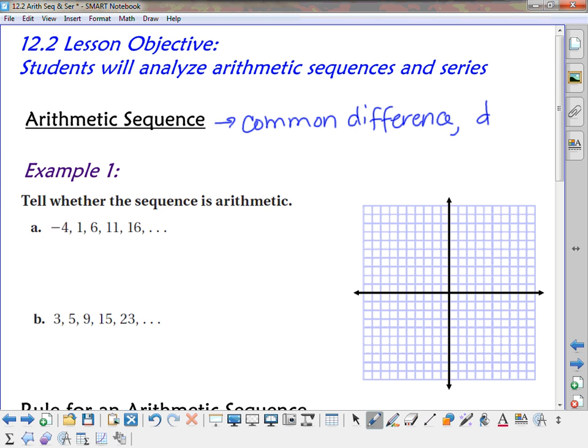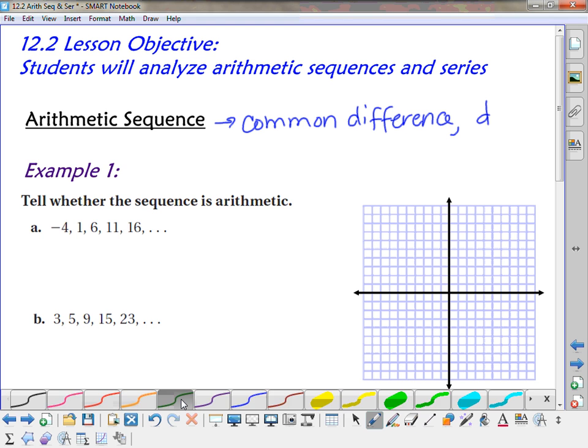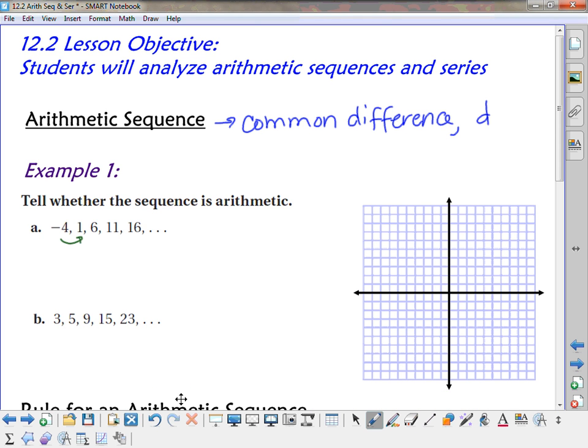For example, if I want to tell whether or not a sequence is arithmetic, I just have to look at what happens as I go from term to term. So as I go from negative 4 to 1, what did I do? I added 5. What about from 1 to 6? I added 5. What about from 6 to 11? I added 5. So do I have a common difference? It's adding 5 every time, so that means that it is arithmetic. And it has a common difference of 5.